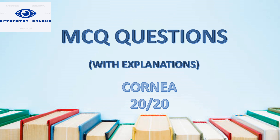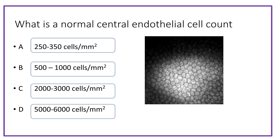First question: what is the normal endothelial cell count? The options are 250 to 350 cells, 500 to 1000 cells, 2000 to 3000 cells, or 5000 to 6000 cells.